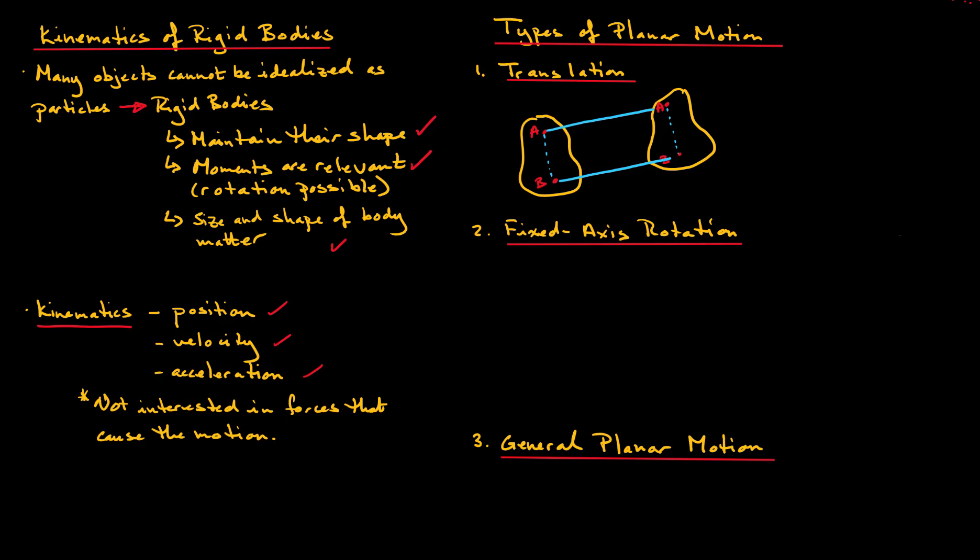So this is an example of translation, but translation does not need to be a straight line between points A and B. If we call this A prime and B prime, we can also have curvilinear motion. So it might take a path that is not necessarily a straight line, but throughout the process points A and B maintain their orientation throughout. Okay, so this is translation.